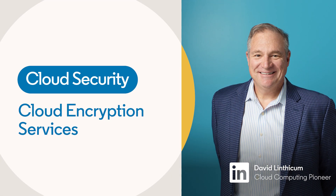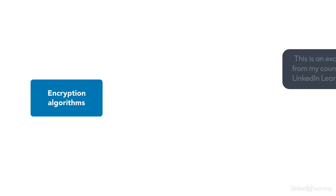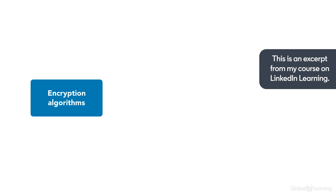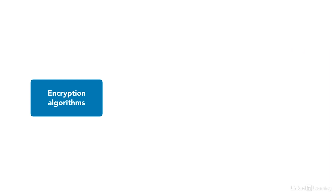Let's talk about cloud encryption services and specifically how we're going to encrypt information or data. The reason we do that is obviously to protect it. It provides us with keys to how we're dealing with information — we hold the key and we're able to unlock the information for our own purposes, but other people cannot unlock the information. It's a common security mechanism because if we're putting something in a public cloud and we're concerned about other people accessing and reading the information, encryption is kind of a first line of defense. But there are different types of encryption out there.